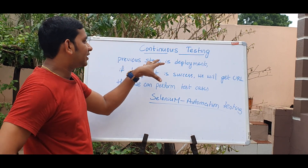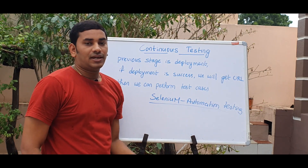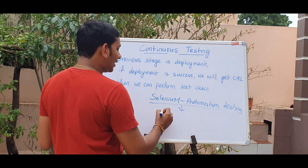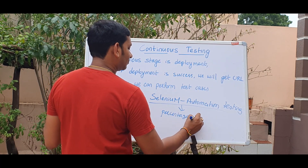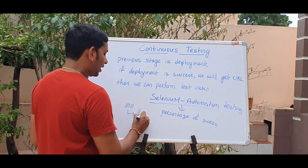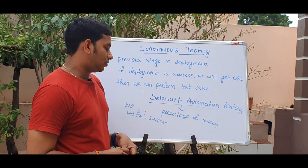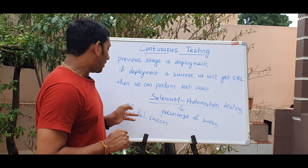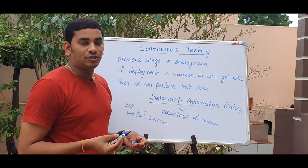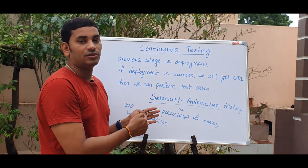Selenium test cases include login, sign up, comments, likes, and share tests. If you have successfully deployed to the URL, the next stage runs these test cases. For one application it may take about half an hour, and then you get a percentage of success. For example, if you have 100 test cases, if at least 90% pass, the application moves forward. If there are failures, you stop, generate an error, and send notifications to developers via email, with logs of the failed test cases.